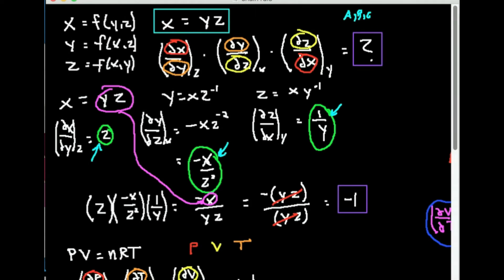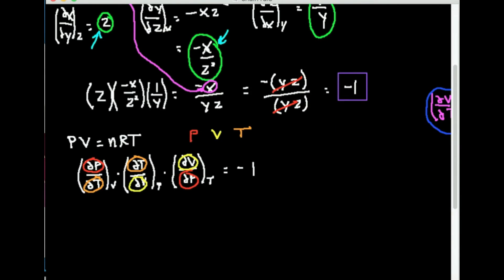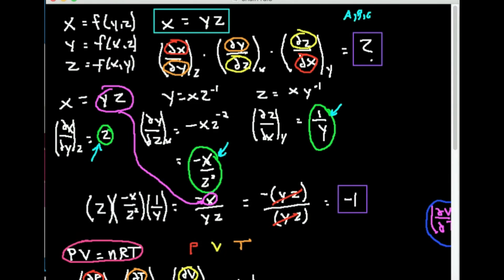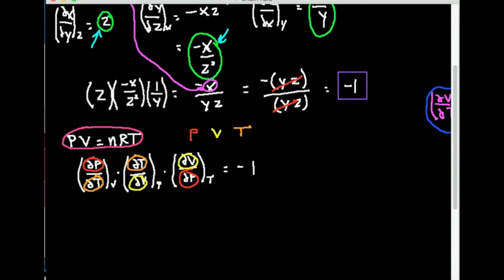Now that's pretty nifty with a simple equation like x equals yz—but what if I apply this to something we already know? In this case, I'm going to use the ideal gas equation, PV equals nRT. Notice I can rewrite this equation much in the same way, rearranging it as I did before, and I'll do that in just a minute to show that this product of partial derivatives equals minus one.